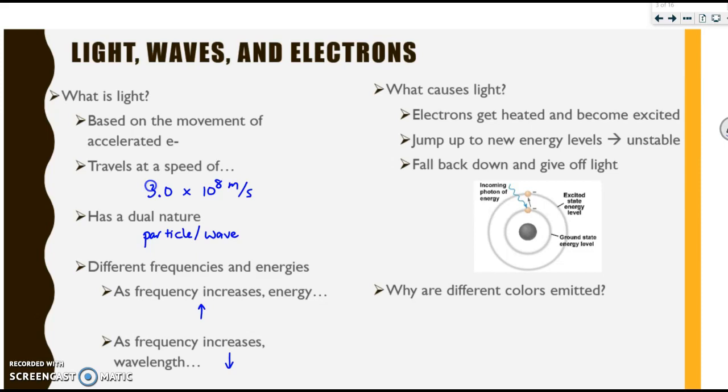Let's briefly discuss what causes light. Electrons are going to get heated and become excited. When they get excited, they jump. They're going to jump up to a new energy level, but they're unstable there, just like you or I would be if we jumped up into the air. And then they fall back down, but now they had extra energy. They have to give off this extra energy. So this extra energy as they fall down is given off as light.